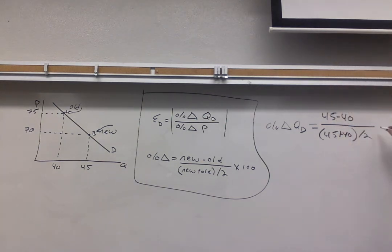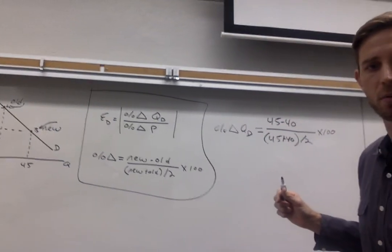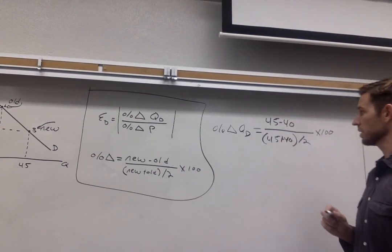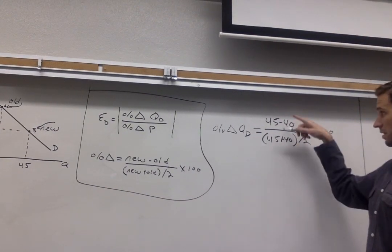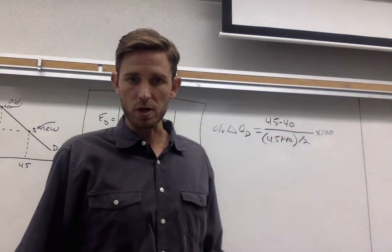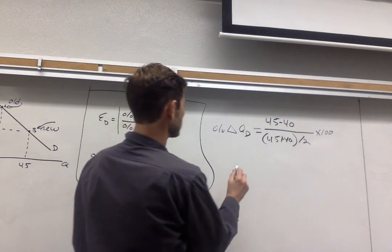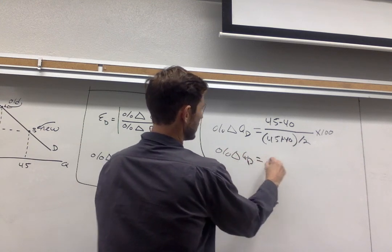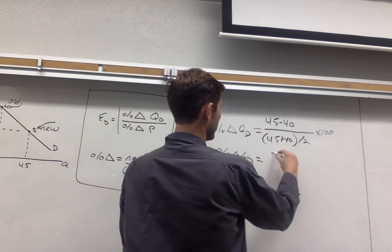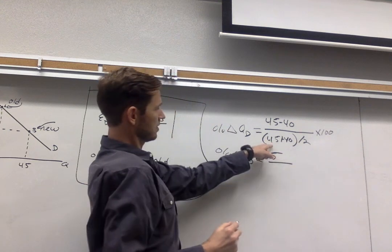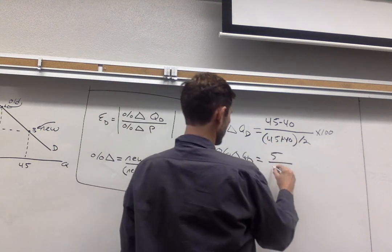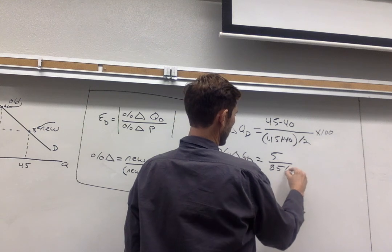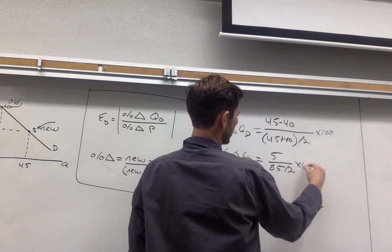And then lastly I'm going to express this as a percentage rather than a decimal. So I'm going to multiply that whole thing by 100. Let me tilt the camera a little bit. There we go. So now it's just a matter of arithmetic. You've set up the hard part. Let's go ahead and start simplifying this thing. So the percentage change in quantity demanded, on top I'm going to have 5 divided by the sum of 45 and 40 which will be 85 over 2 multiplied by 100.